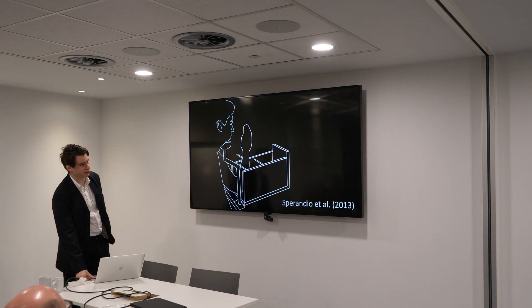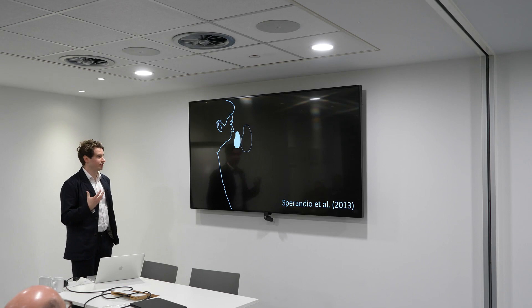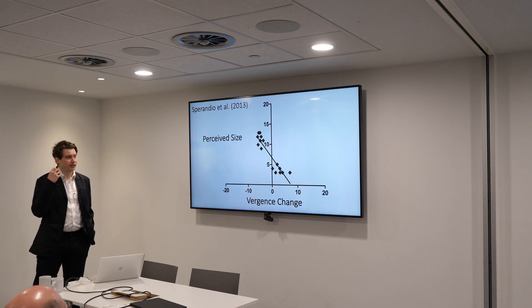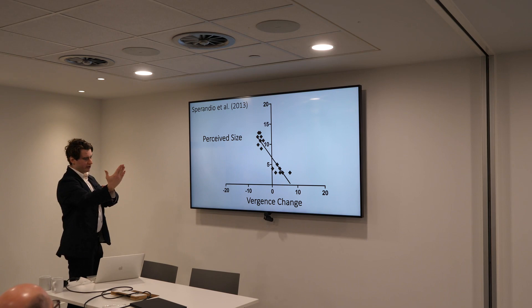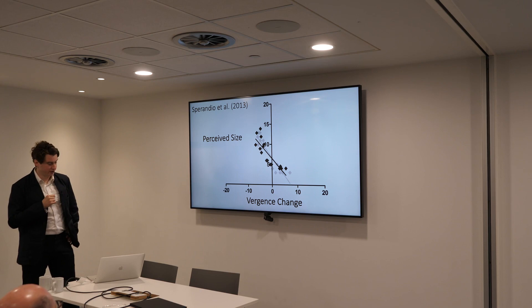What about vergence as a cue to size? We can look at the so-called Taylor illusion — the suggestion that if you have an after-image of the hand and then move your physical hand closer to you, you see it reduce in size, or move it further away and you see it increase in size. Spirandio and colleagues looked at this and found a strong linear relationship between vergence and perceived size. They attribute the effect almost entirely to vergence because even when they set hand movement and vergence in opposite directions, there was only a modest reduction in the effect.